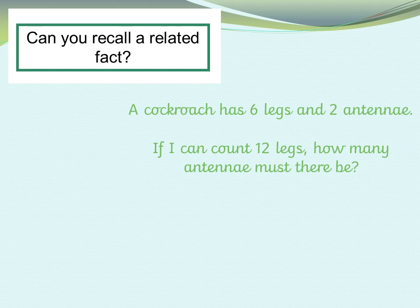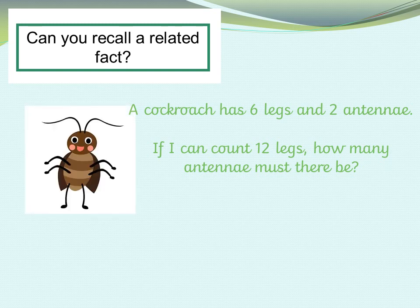Okay, so we're going to begin to look at our correspondence problems now. Here's a fact for you: a cockroach has six legs and two antennae, which are those little stalks on its head that it uses to feel its way around the world. A cockroach has six legs and two antennae. If I can count 12 legs, how many antennae must there be? Have a think and make a note of your answer.